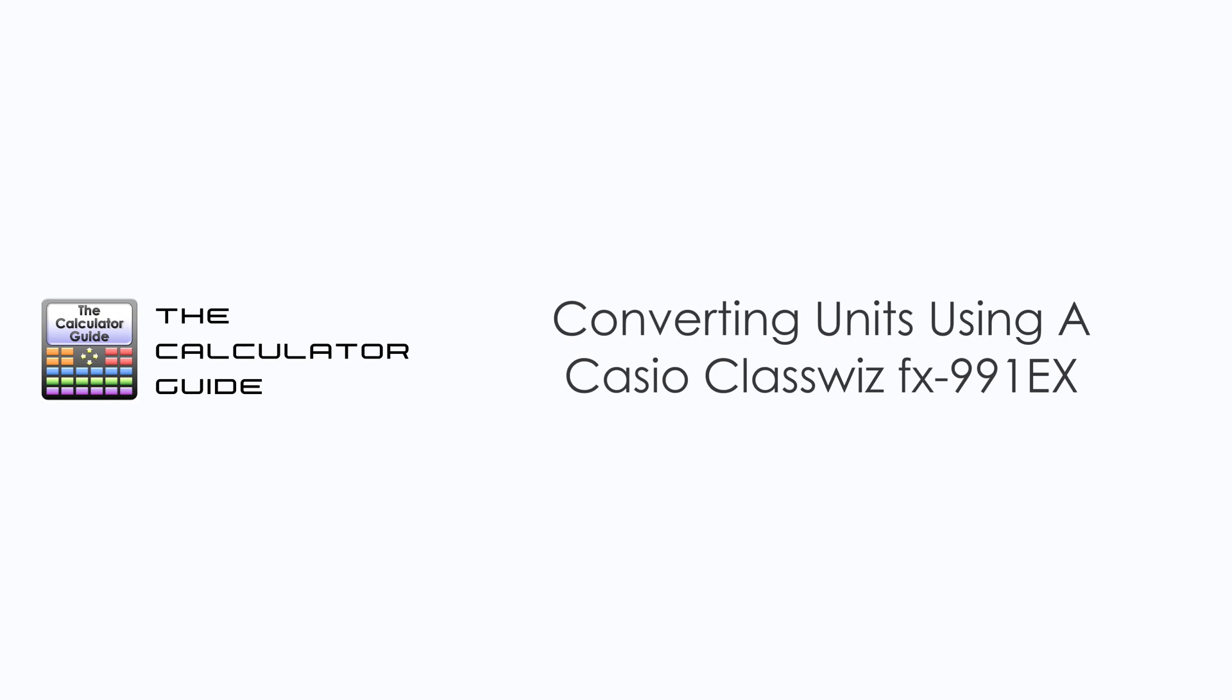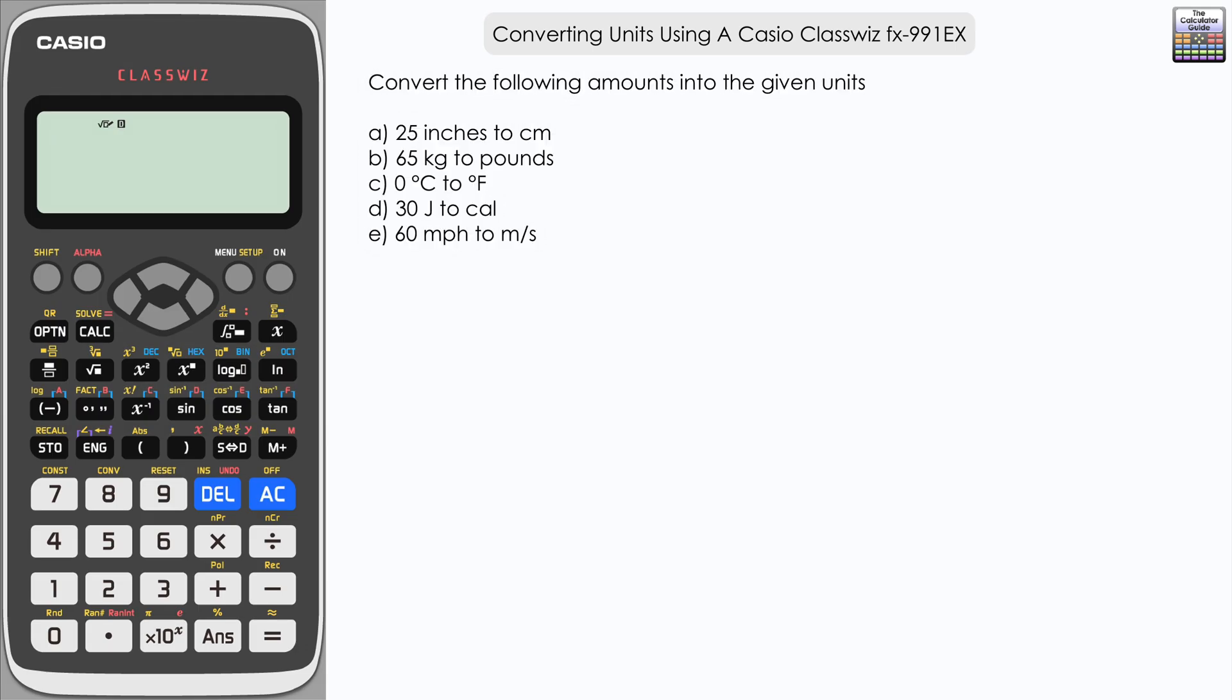Hello and welcome to the calculator guide video on converting units using a Casio FX991EX. We've got to convert the following amounts into the given units. I've chosen here five very common conversions that you may encounter, and in particular the last one there, miles per hour to meters per second, there's a little trick to be able to do this and make that conversion really easy. I suggest that you make sure you watch the video all the way to that one.